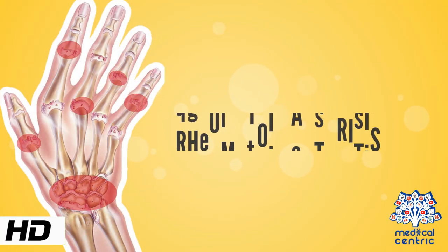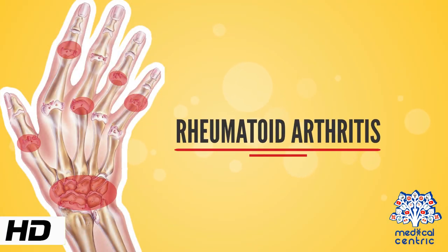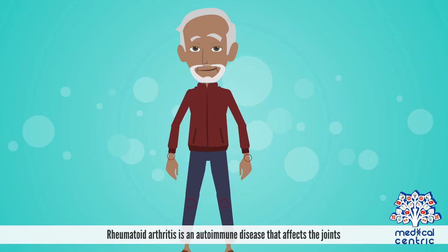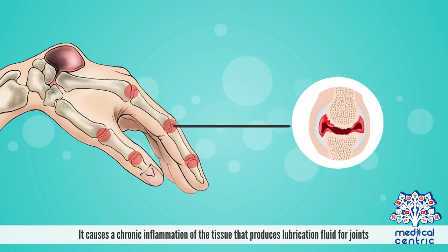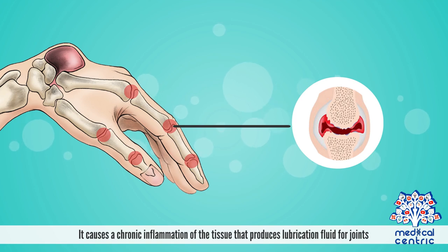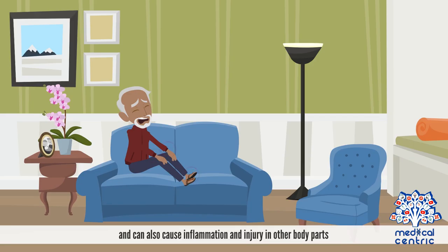Today's topic is Rheumatoid Arthritis. Rheumatoid arthritis is an autoimmune disease that affects the joints. It causes a chronic inflammation of the tissue that produces lubrication fluid for joints and can also cause inflammation and injury in other body parts.